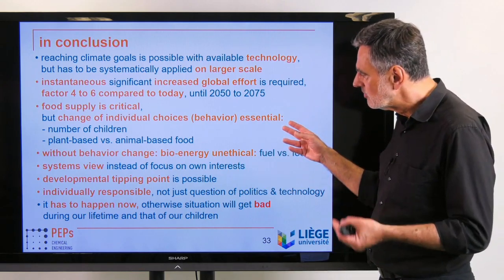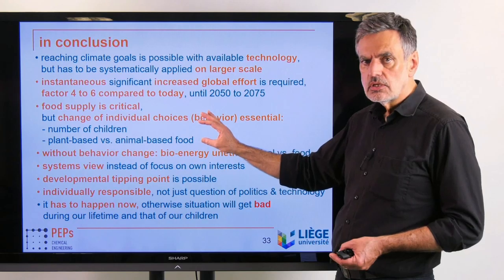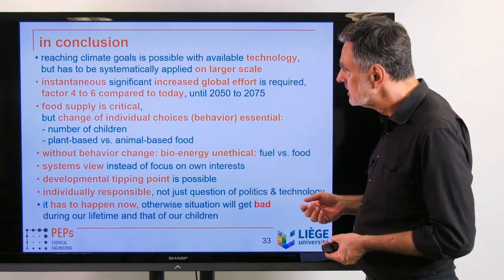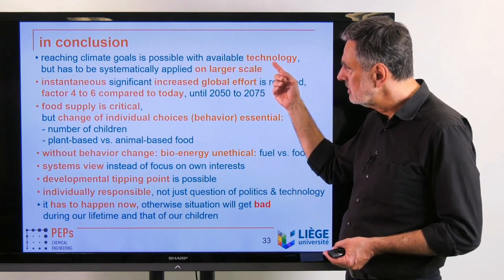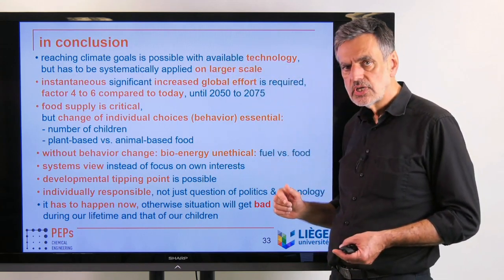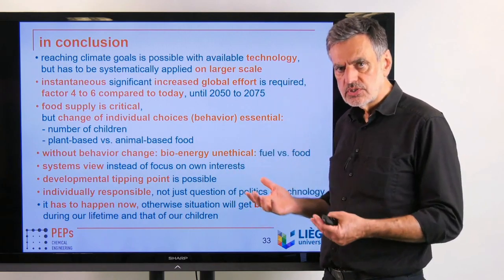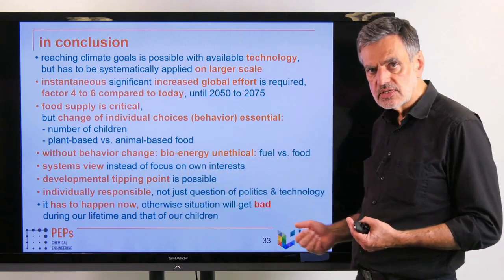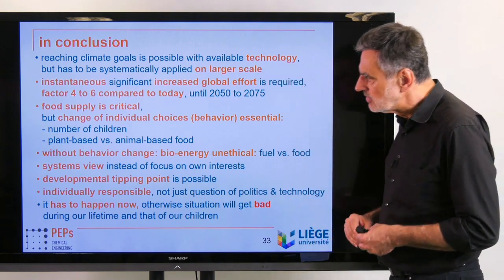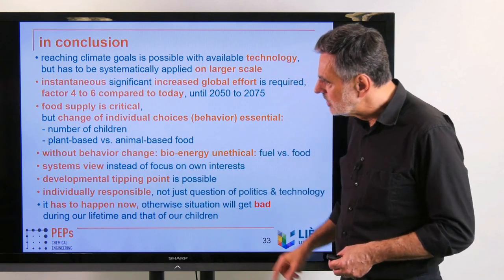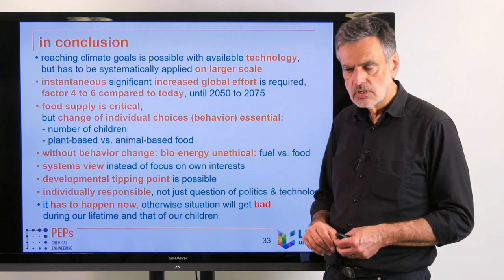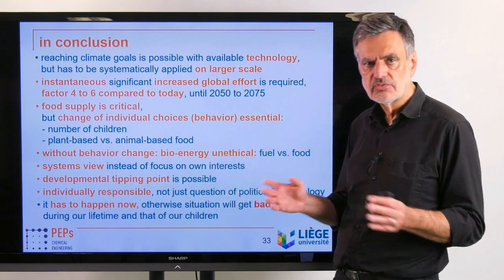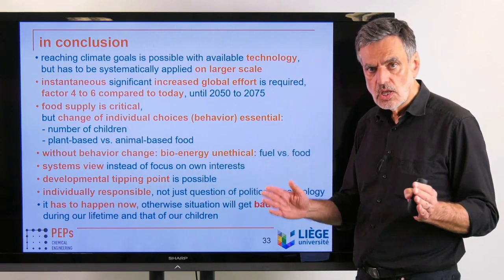We need to take a systems view to realize how the interrelations work and then act accordingly. Reaching the climate goals is possible with available technology. But we need to instantaneously and significantly increase the global effort compared to today by a factor of four to six, depending on the climate goal — preferably six to limit climate change to 1.5 degrees centigrade — and keep up that effort until 2050 or 2075.